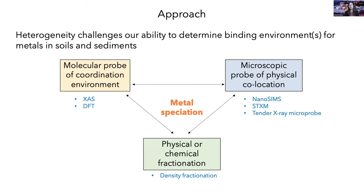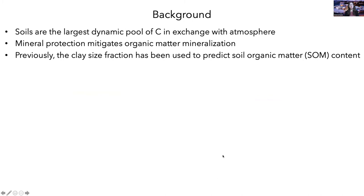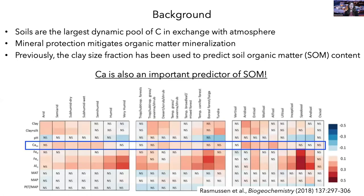The reason I'm interested in this problem is because soils are the largest dynamic pool of carbon in exchange with the atmosphere. Mineral protection — the sorption of organic matter to mineral surfaces — can mitigate against organic matter mineralization, that is conversion to carbon dioxide and flux of that CO2 into the atmosphere. For a long time it's been recognized that the clay size fraction can be used to predict soil organic matter content in sediments. However, it's recently been recognized that in certain soils, calcium can also be an important predictor of organic matter content, which implies that there's a chemical association between these two materials.